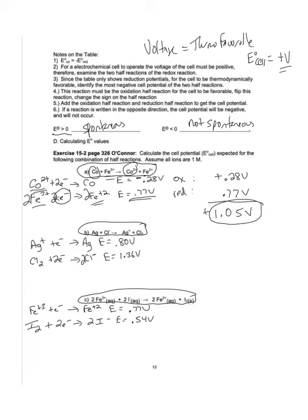Adding those up gives positive 1.05 volts for that cell combination. For letter B, the silver reaction has to be flipped, giving negative 0.80 volts, and the chloride reaction also has to be flipped — which means both half reactions are oxidation. This cell combination is impossible. You can't have both half cells being oxidation or both being reduction — someone has to lose electrons and someone has to gain electrons for there to be a transfer of electrons.